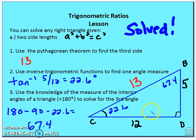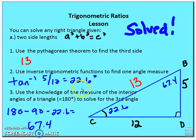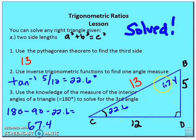For the first example with two side lengths: we have a 5-12-13 triangle and can use the Pythagorean theorem for the third side. Then we use inverse trig — inverse tangent of 5 over 12 (opposite over adjacent) — to get 22.6°. Since the angles of a triangle sum to 180°, angle B equals 67.4°.